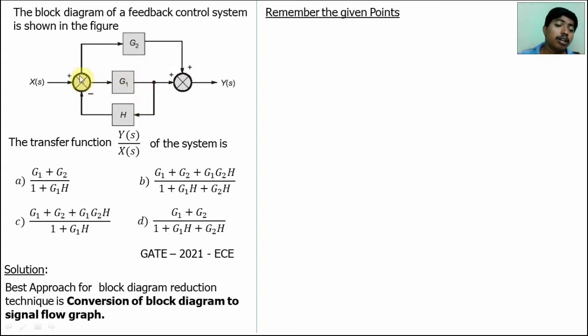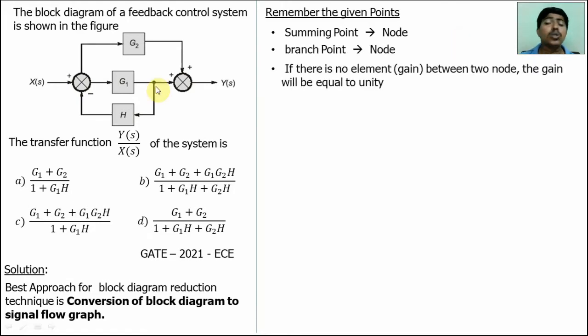In this block diagram, there is summing point and a branch point. So the summing point is equal to node in the signal flow graph. Similarly, this branch point is equal to node. If there is no element between the nodes, then the gain of the branch will be equal to unity because input is equal to output.